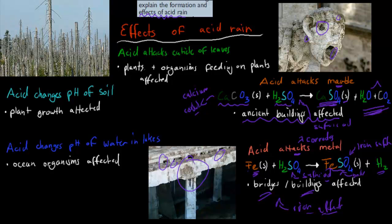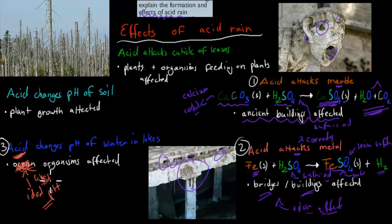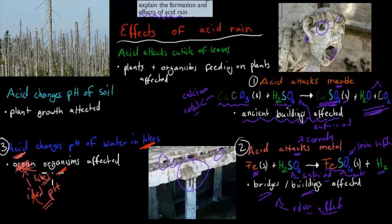Another effect is that acid changes the pH of lakes. All living organisms have an ideal pH — for example, most enzymes in our body want a pH of about 7. If the acid rain lowers the pH of lakes, the organisms living inside have a less ideal pH to deal with, and often they don't survive. So acid changes the pH of water in small bodies of water like lakes, and that's a problem for all living things inside.